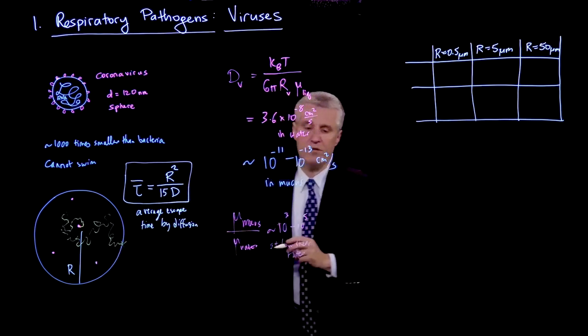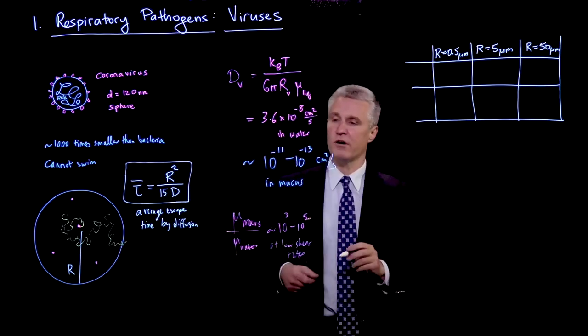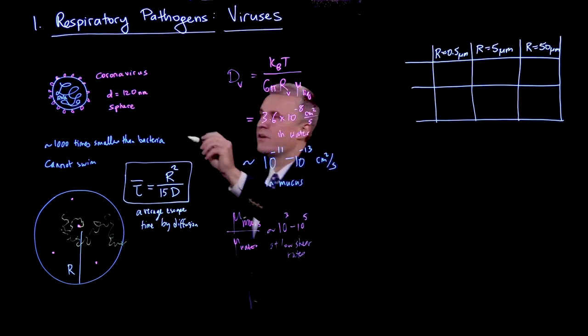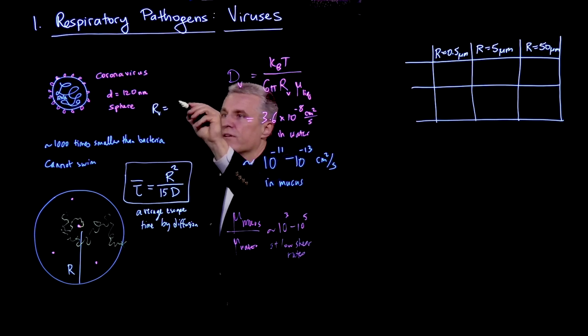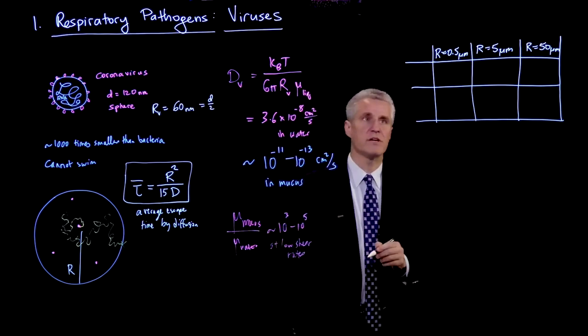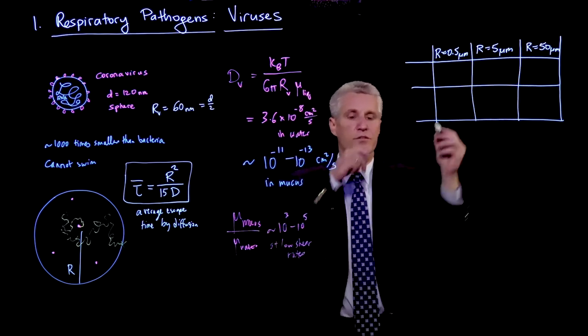And I should say this is R of the drop. So the R here, just to be careful, is the R of the drop as opposed to the R of the virus, which is R of V, half of D, so that's 60 nanometers. OK, so that's the diameter. OK, so this is the different size of the drops.